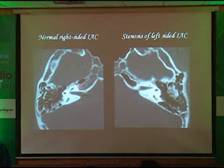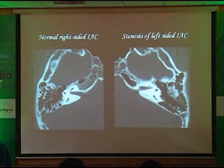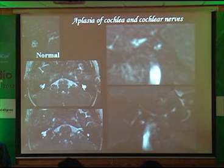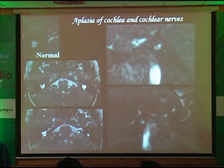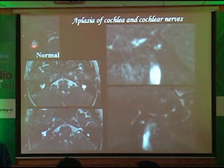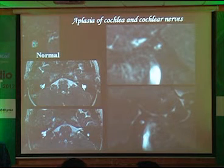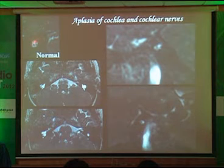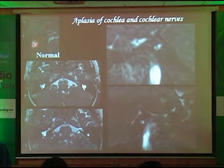IAMs: normal versus stenotic internal auditory canal. For cochlear implant candidates, remember the four-dot sign on MR: one, two, three, four. The superior one is facial nerve; superior division of vestibular; inferior division of vestibular; and the cochlear nerve. The facial and cochlear nerves should be of the same size — please remember this when you do an MR.